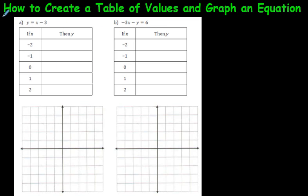For example, here is an equation right here: y equals x minus 3. This is called a linear equation because it's going to be a straight line when we graph it. You can use a table of values to graph just about any equation out there. In this case we're doing linear equations, but the same technique will work for any equation.